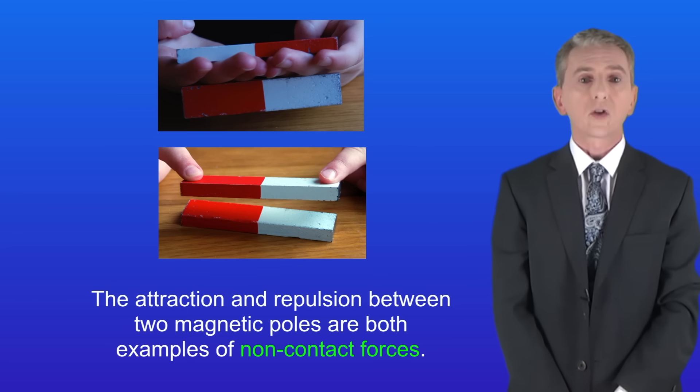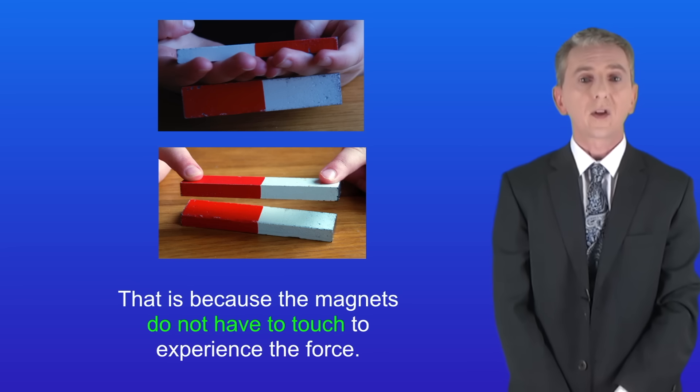The attraction and repulsion between two magnetic poles are both examples of non-contact forces and that's because the magnets don't have to touch to experience the force.